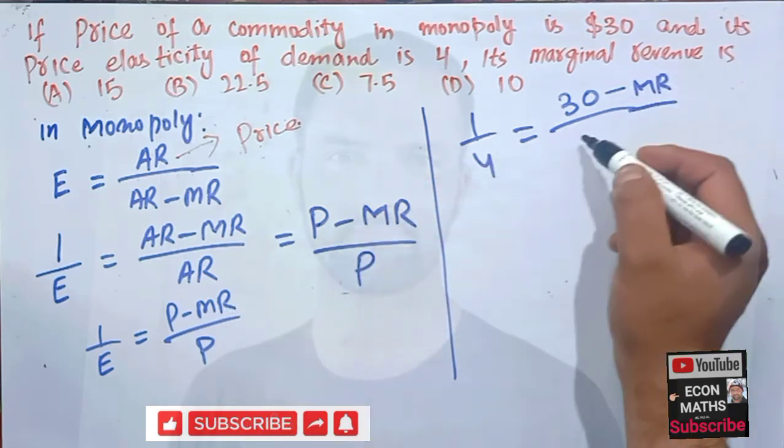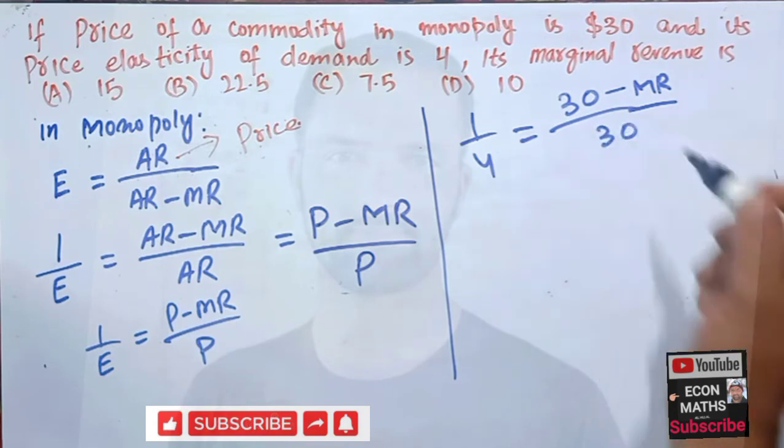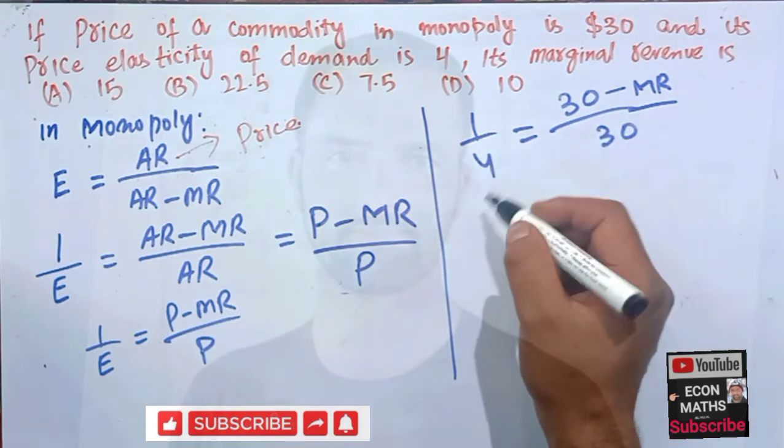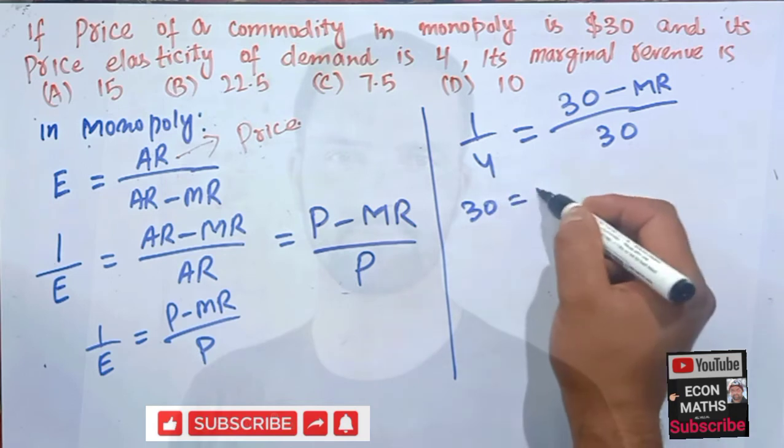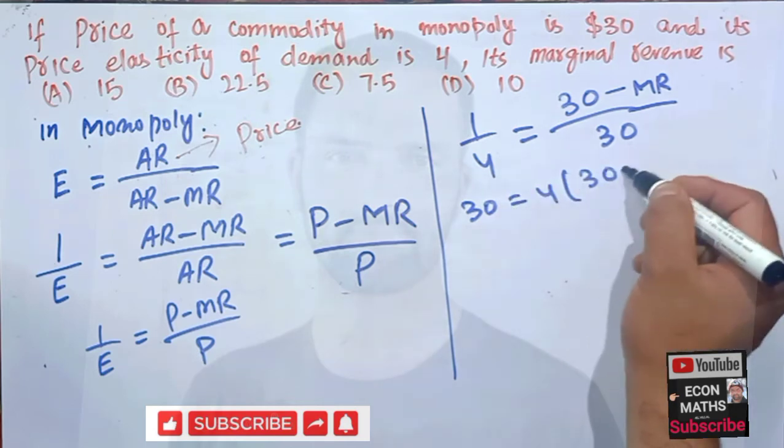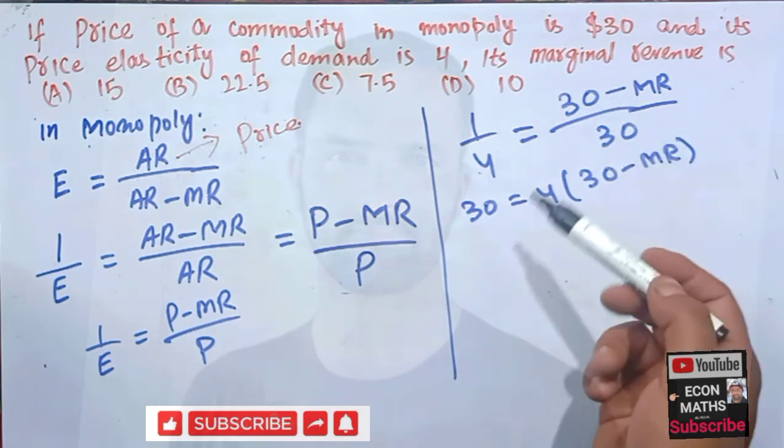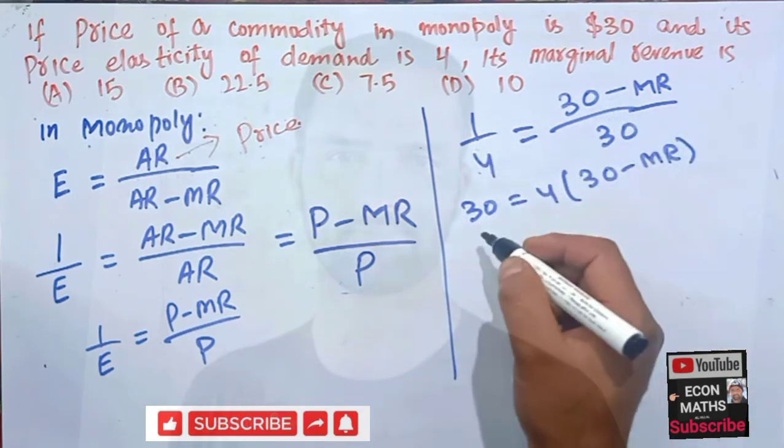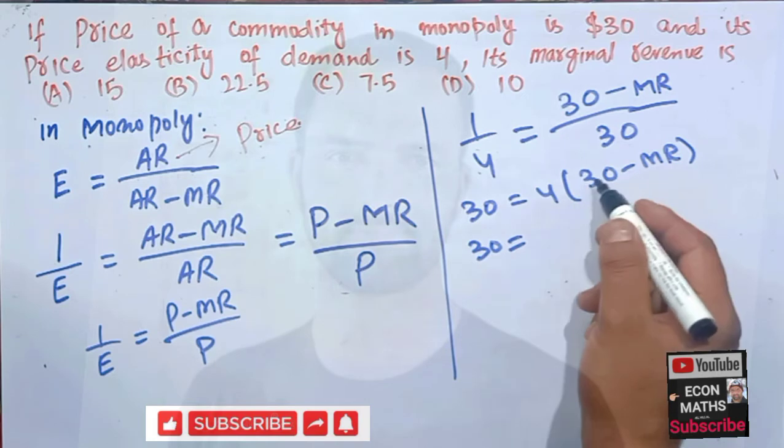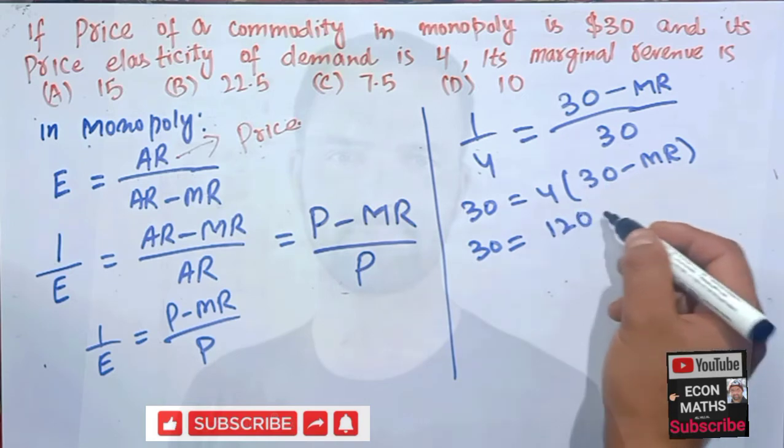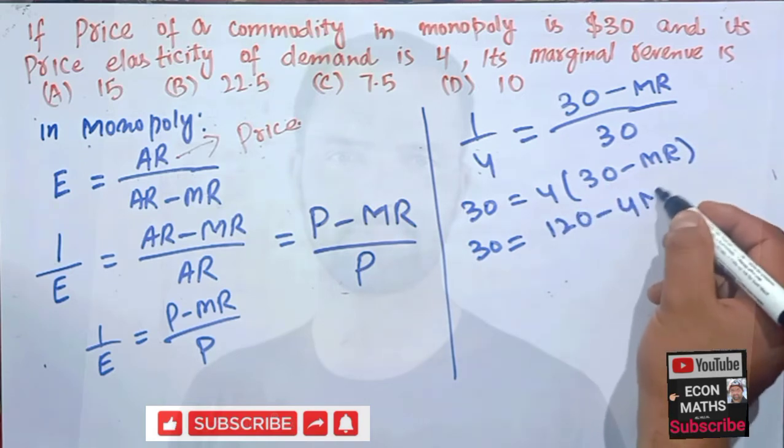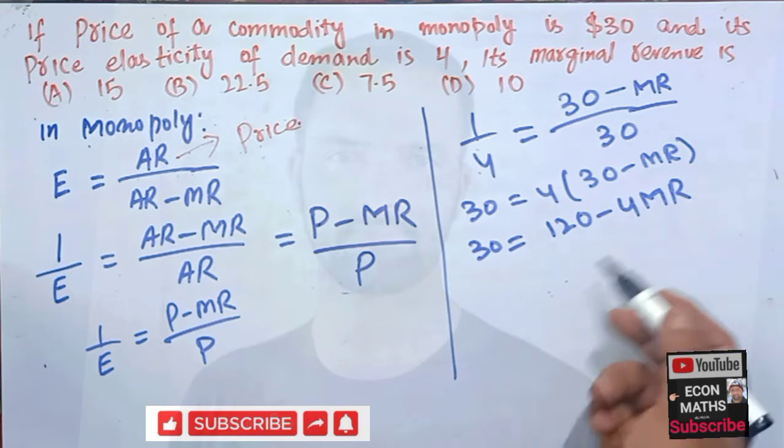Just cross multiply. We have 30 is equal to 4 times (30 minus MR). This term crosses with this term, so we have 30 equals 4 times 3 which yields 120 minus 4MR, or we can just transpose this negative 4MR.